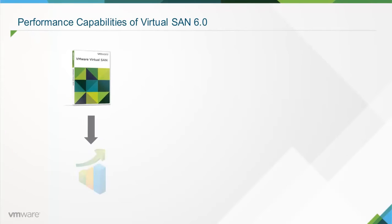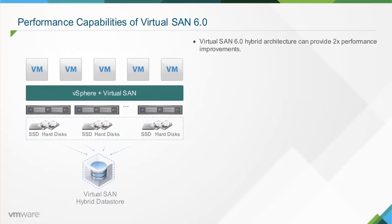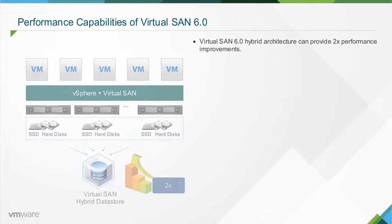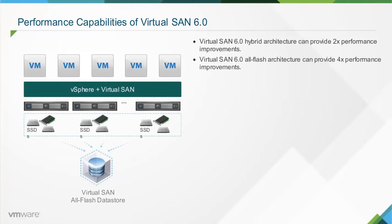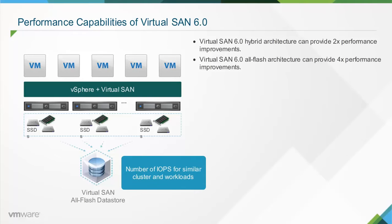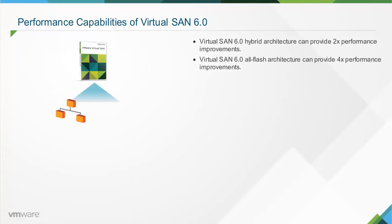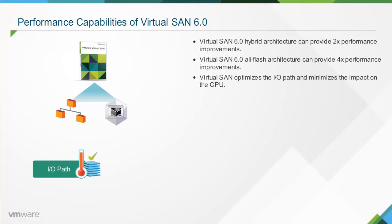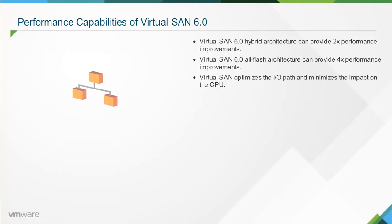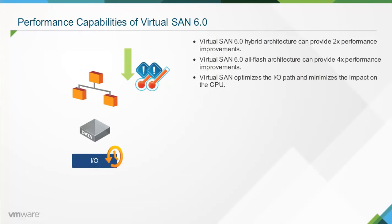Virtual SAN 6.0 delivers high performance that can meet the needs of the most demanding workloads. A Virtual SAN 6.0 hybrid architecture can provide a 2x performance improvement over Virtual SAN 5.5 hybrid architectures, while the all-flash architecture can provide 4x performance improvements based on IOPS for similar cluster and workloads, with predictable low latency. Because Virtual SAN is built on the hyper-converged architecture and into the VM kernel, it optimizes the IO path and minimizes CPU impact compared to storage software solutions that run as an extra storage virtual appliance on top of the hypervisor. The hypervisor-based distributed architecture reduces bottlenecks and provides the lowest latency without compromising compute resources or virtual machine consolidation.